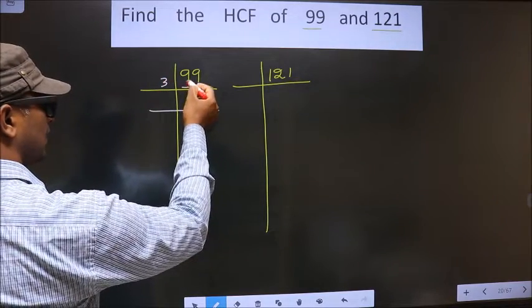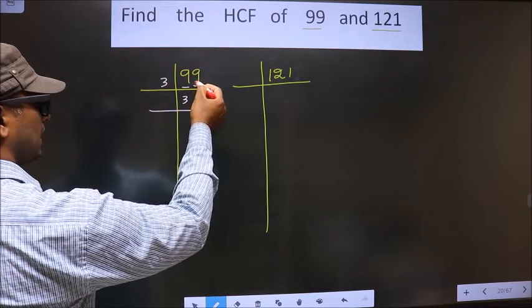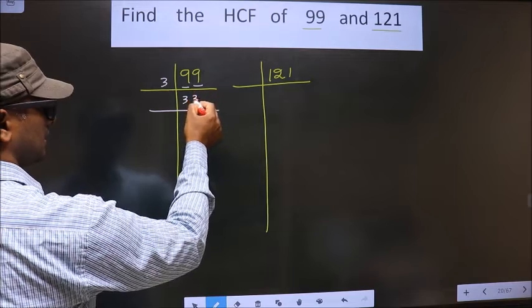First number is 9. When do we get 9 in the 3 table? 3 times 3 is 9. Next number is 9. When do we get 9 in the 3 table? 3 times 3 is 9.